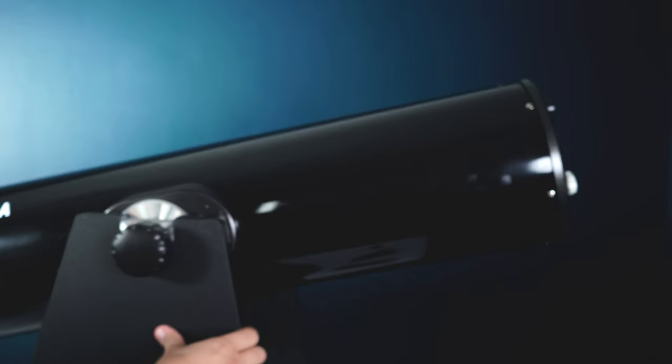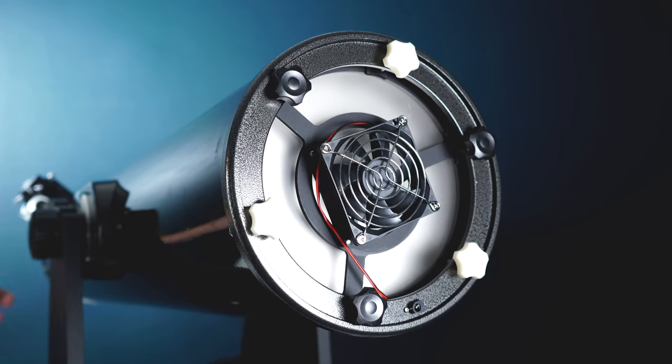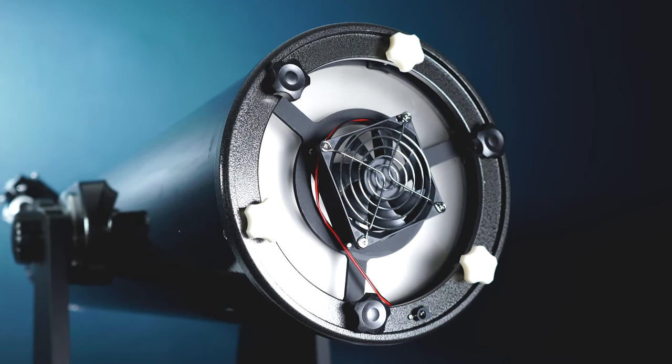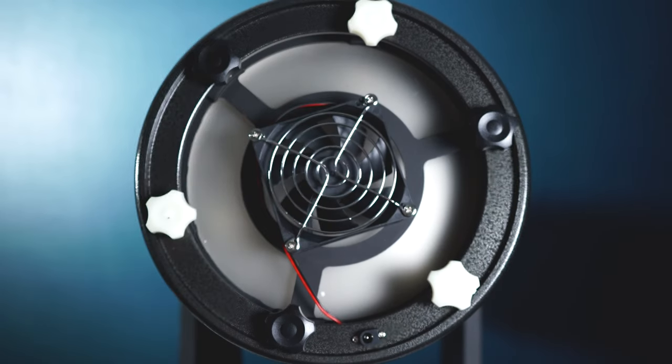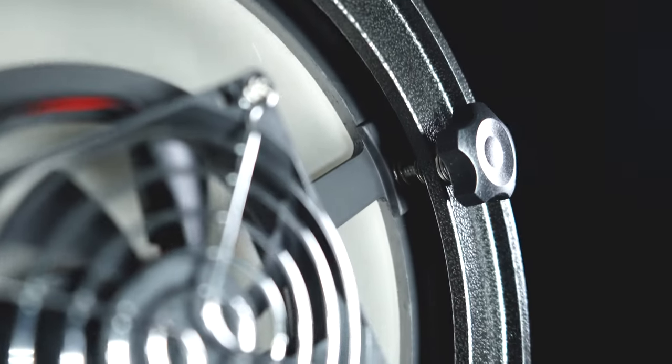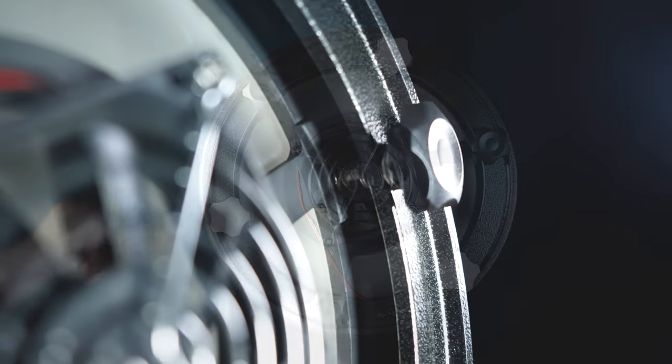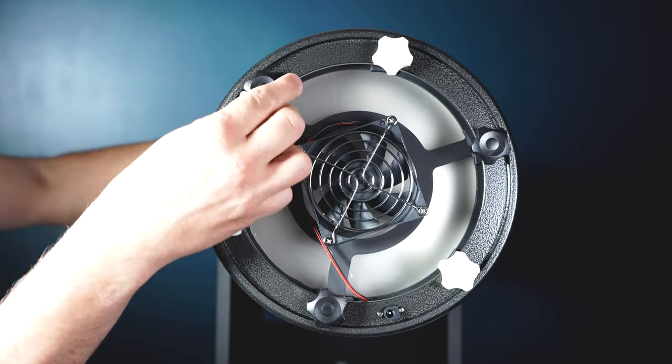Now we have to work on the primary mirror collimation springs. For this step you want to position the telescope so that the back of the scope is easily accessible. Like the secondary collimation knobs these will be removed one at a time. There are three white knobs and there are three black knobs. Behind the black knobs you'll find the springs. These are what we will be replacing so no need to even touch the white knobs.